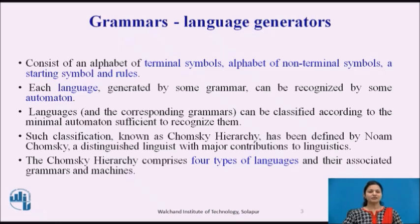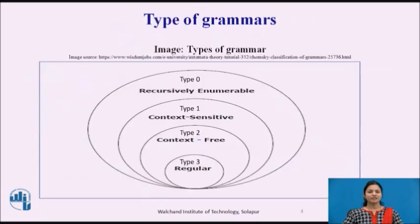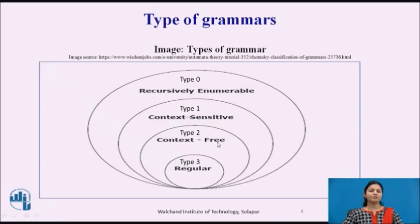The Chomsky hierarchy comprises four types of languages and their associated grammars and machines. Type 0 is recursively enumerable, also called non-restrictive. Type 1 is context-sensitive. Type 2 is context-free grammar. And Type 3 is regular grammar.